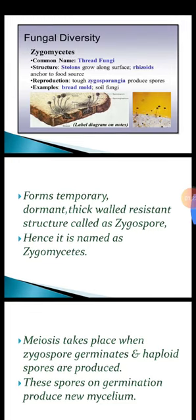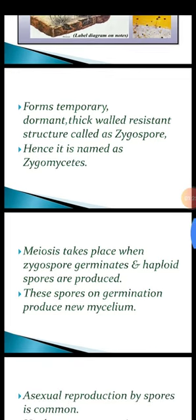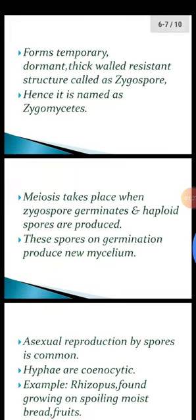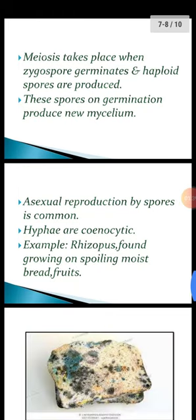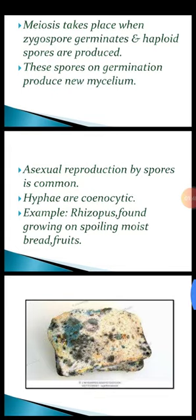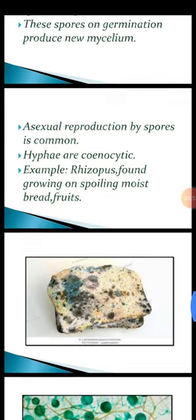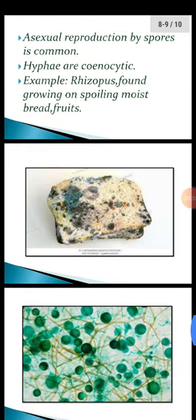Meiosis occurs when the zygospore germinates, and haploid spores are produced. These spores on germination produce new mycelium, or the body of the fungus. Asexual reproduction by spores is also common. Hyphae are coenocytic, meaning they lack cross walls. An example is Rhizopus, the black bread mold, found growing on spoiling moist bread and fruits.